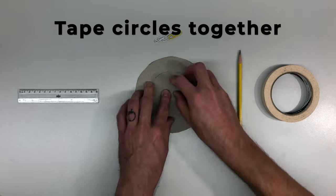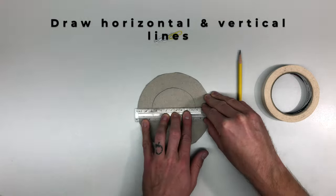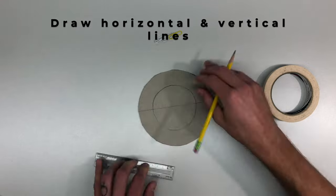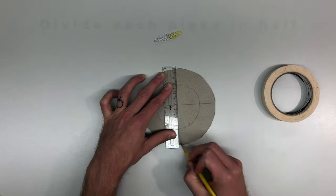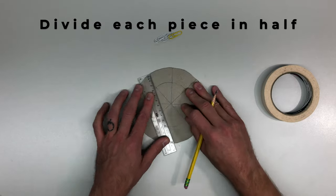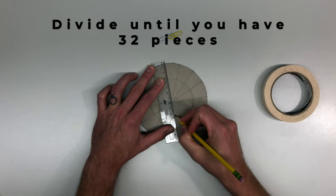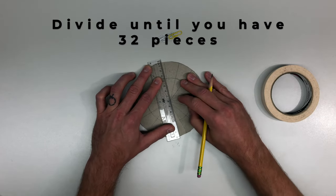Step two: take a piece of tape and tape the smaller circle on top of the bigger circle in the middle. Then draw a horizontal line through the middle of both circles and then a vertical line. Now rotate both circles and divide each piece in half. Continue dividing each piece until you have 32 pieces.